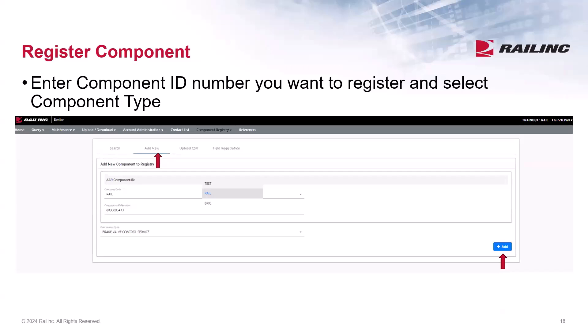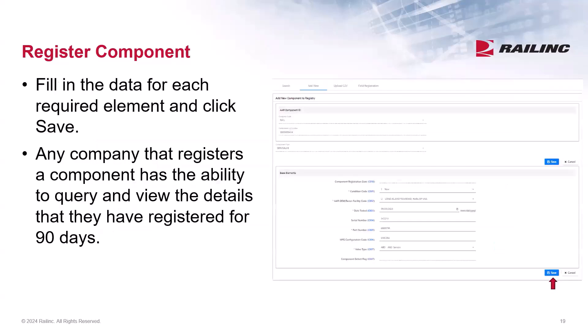To register a component, select Add New from the submenu. Notice the default company code is RAIL, and there is a drop-down menu because RAIL has additional company codes for other locations. Once you enter the Component ID, select the component type. In this example, I will register a service brake valve. If the company code is missing from your screen, please contact our Customer Success Center for it to be added. Mandatory elements will have an asterisk. Always use the calendar icons to select dates and use the drop-down list when provided.